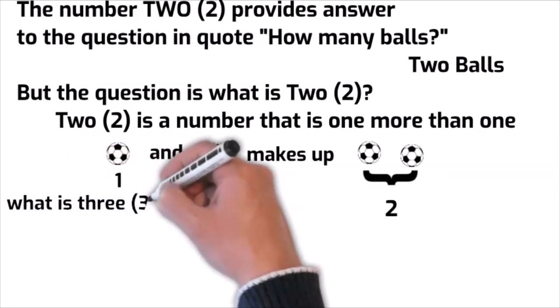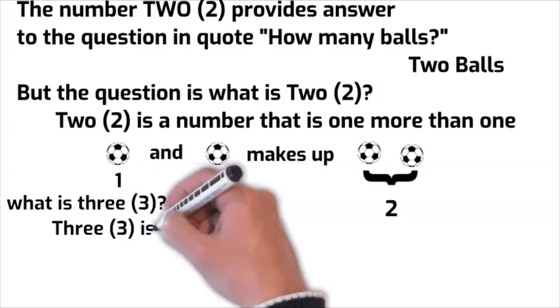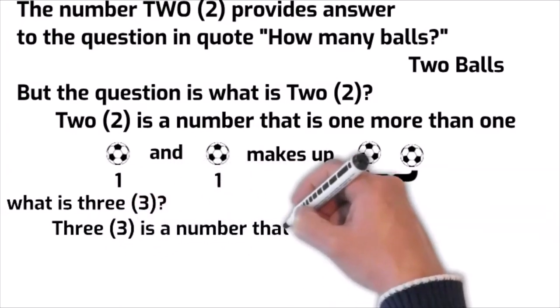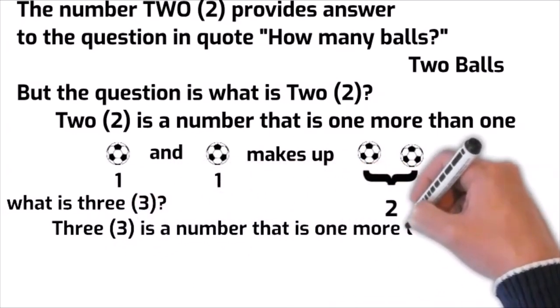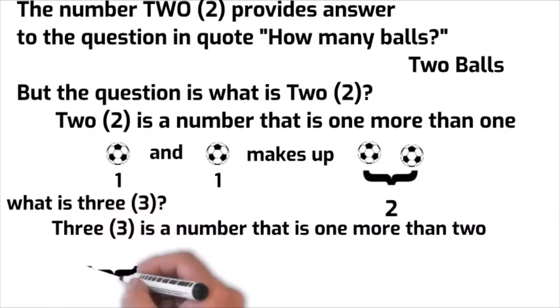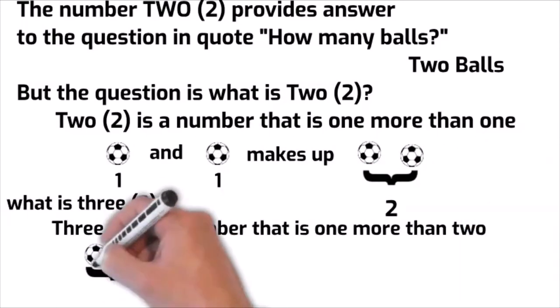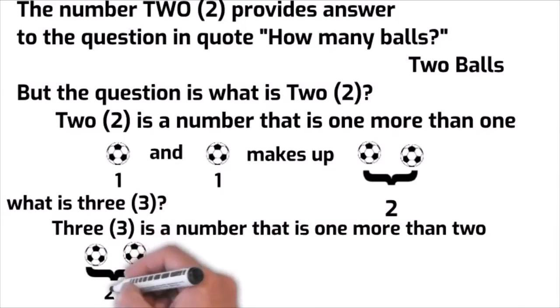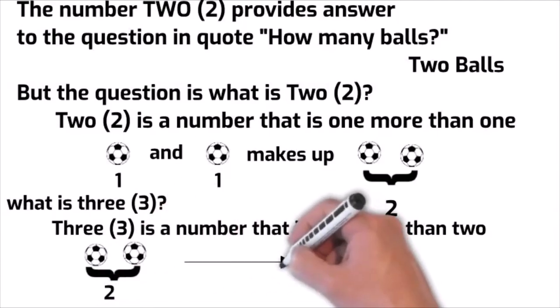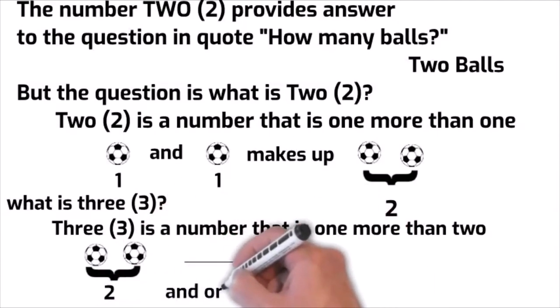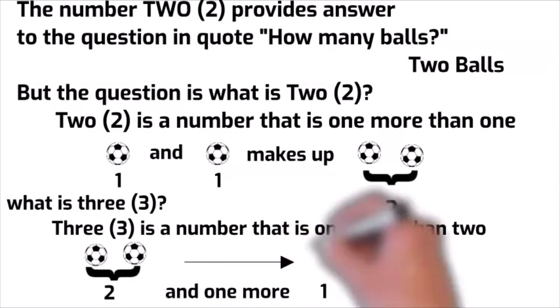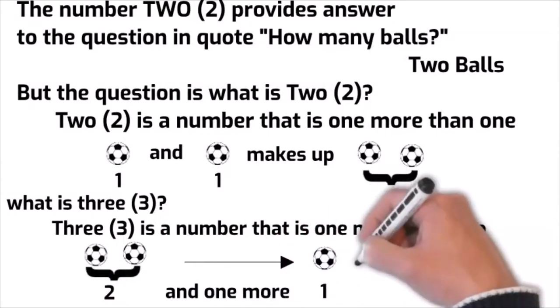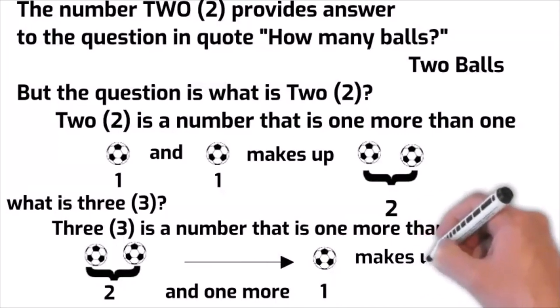What is three? Three is a number that is one more than two. One, two, and one more makes up three.